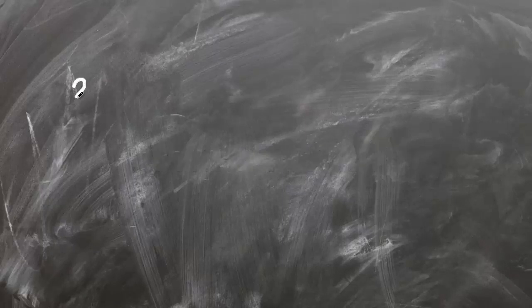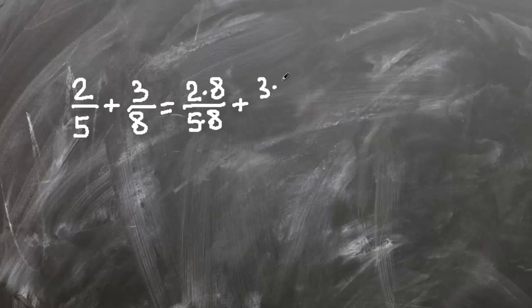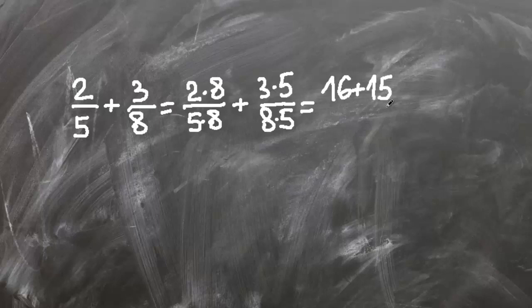Let's solve two fifths plus three eighths. Common denominator for five and eight is forty so we multiply two fifths by eight and three eighths by five. We get two times eight over five times eight plus three times five over eight times five. Now this is sixteen plus fifteen over forty and this is thirty one over forty.